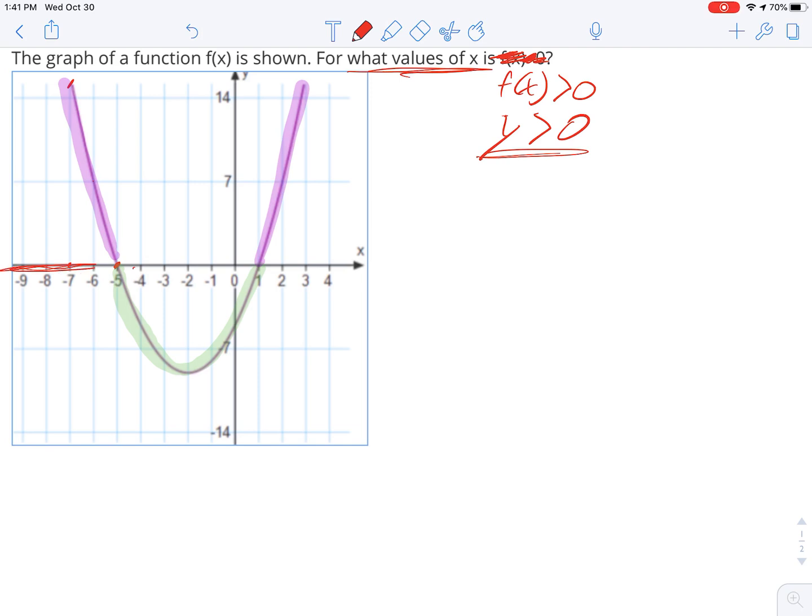So all these x values out here, right? Negative 8, you get a big positive. Negative 9, big positive. Negative 100, big positive. All these x values when you plug them in are giving you positive y values, right? Negative 6 and 7, negative 7 and negative 15, positive, positive, positive, right? All these x values here give you positives.